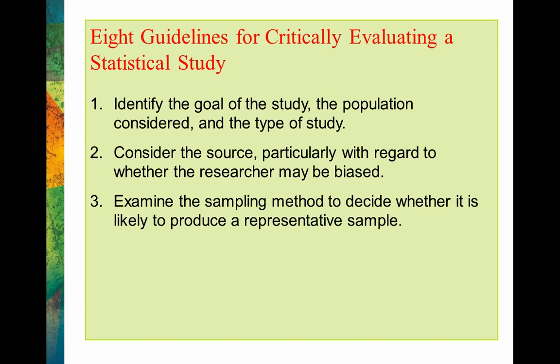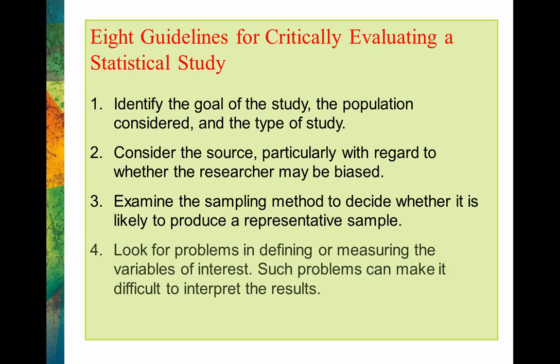We'll want to examine the sampling method to decide whether it's appropriate. An appropriate sampling method will produce a representative sample. Oftentimes research is done with a sampling method that leaves much to be desired. We'll also want to look for problems in defining or measuring the variables of interest, because these problems can make it difficult to interpret the results. A lot of the things we study are not black and white — they're relatively vague, like bullying or intelligence. There are many different ways to measure these types of things, so it's very important to understand how the researchers were defining the variable of interest.